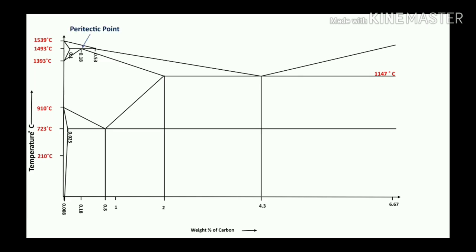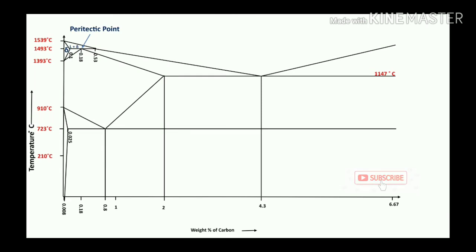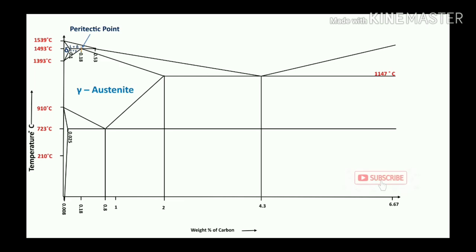Starting with the peritectic point: peritectic means liquid plus solid converts into a new solid. In the case of the iron-carbon diagram, liquid plus delta iron is involved. According to the solubility at higher temperature, carbon forms delta. So delta plus gamma — according to the peritectic reaction, liquid plus delta converts into 100% new solid, represented as gamma austenite.